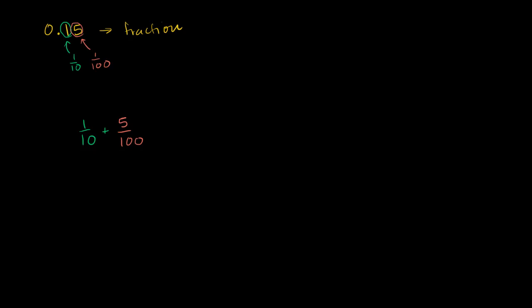we want to find a common denominator. The common denominator is 100, both 10 and the least common multiple, both 100 is a multiple of both 10 and 100. So we can rewrite this as something over 100 plus something over 100.